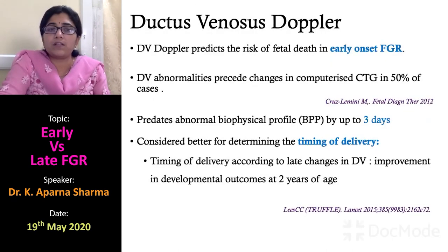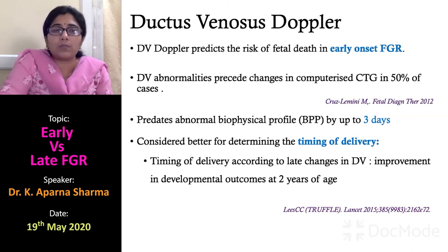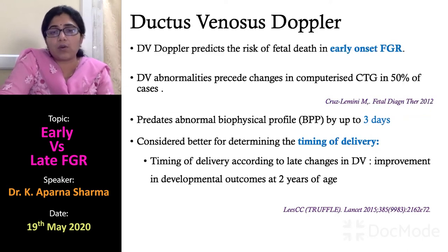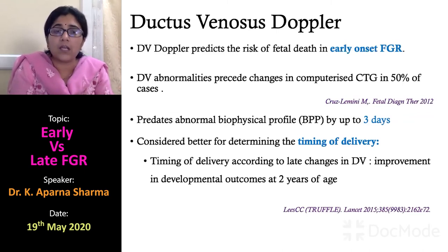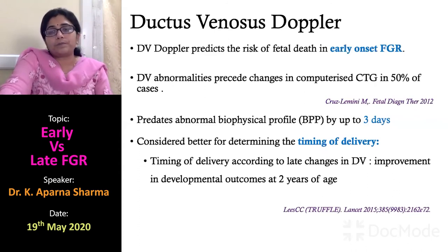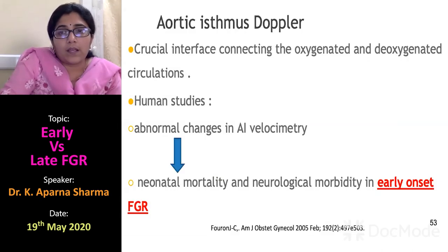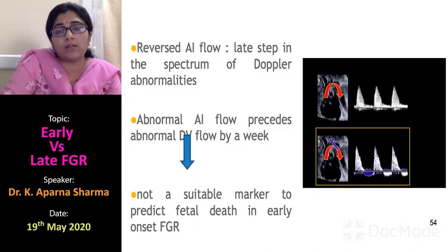The role of ductus venosus Doppler is in early onset IUGR, where timing of delivery is critical each day. It predates the abnormal biophysical profile by up to three days and is better for timing delivery based on late DV changes. The TRUFFLE trial showed improved developmental outcome at two years when delivery was timed according to ductus venosus changes compared to computerized CTG. Once absent flow is confirmed, we should monitor daily for reversal of flow and ductus venosus waveform changes.